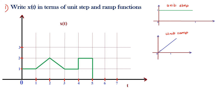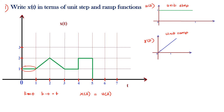Now I am going to explain how to write the equation. The first part looks like a unit step signal and it starts from t = 0, so t minus zero is just t. The unit step signal is always represented as u(t), and the unit ramp signal is represented as r(t). So x(t) starts with the first term: u(t).